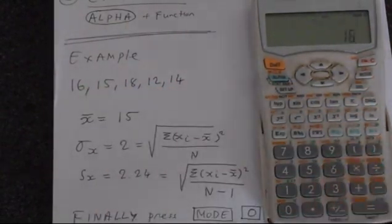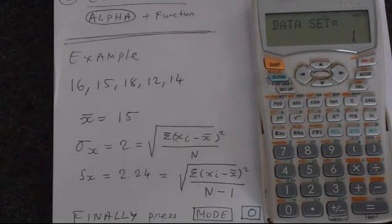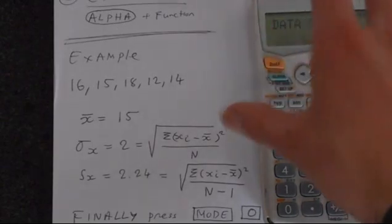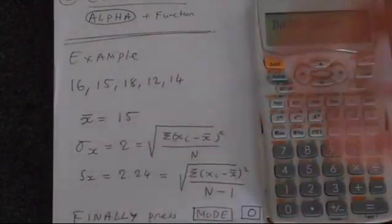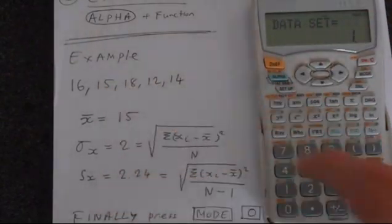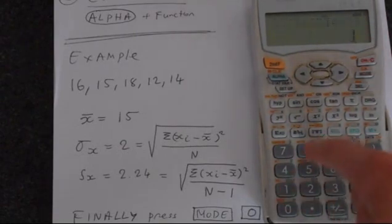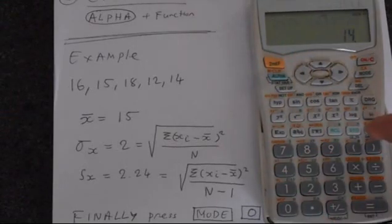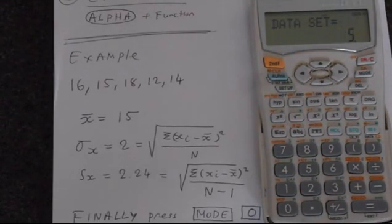To enter these, as we said, type in the number. So 16, then press M plus. You get data set equals 1. That's one thing that we've stored. This will count up as we enter data. So let's enter the rest of them. 15, M plus, 18, M plus, 12, and 14. So there's our data set.